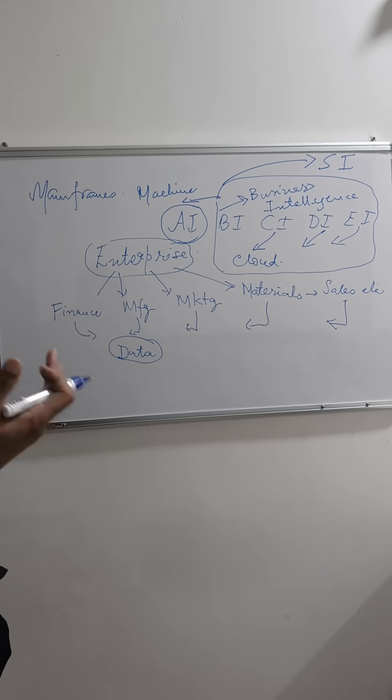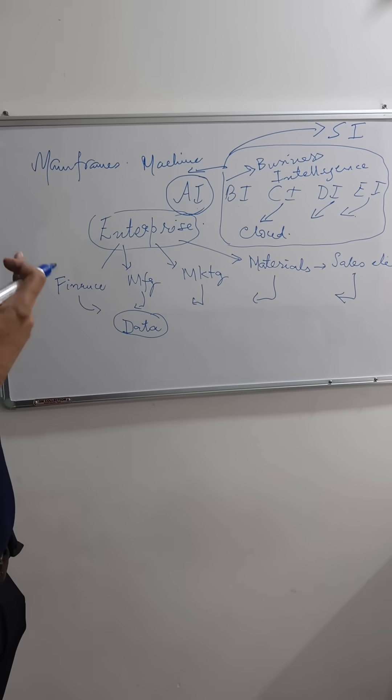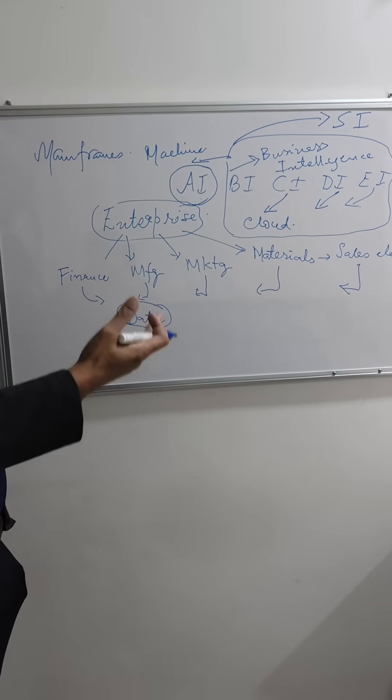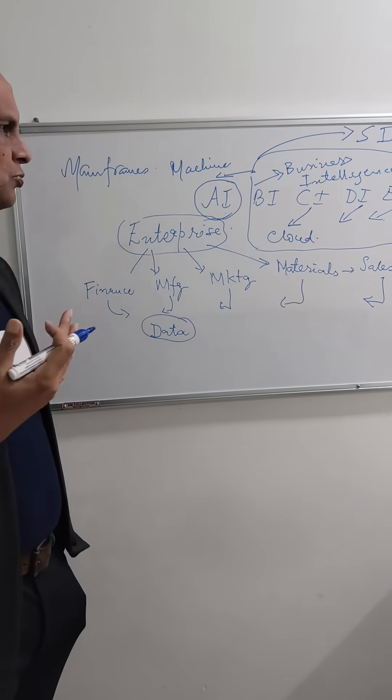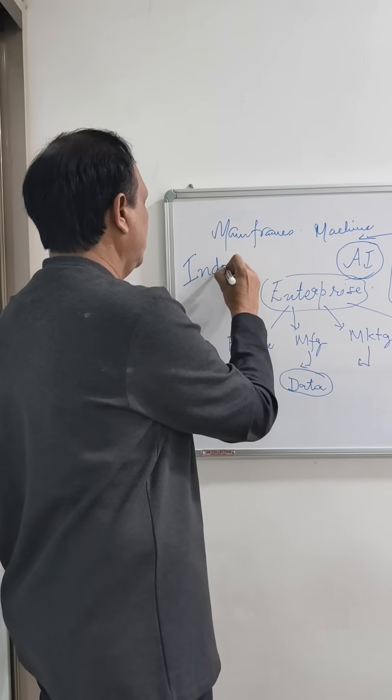So what exactly we are meaning by smart? So today, if you look at it, we come up with smart watches. We are doing things very smartly than what exactly it has been done before. That's what exactly is your Industry 4.0.